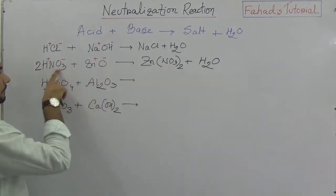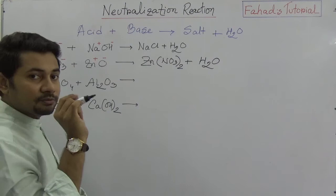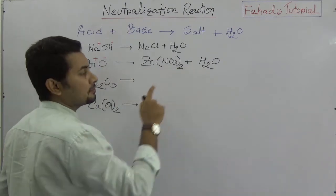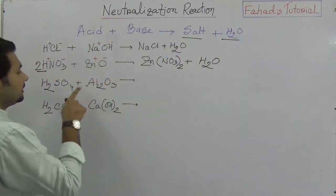So nitrate is 2, and that is why hydrogen becomes 2. This is the production which is composite. Salt and water will be produced.